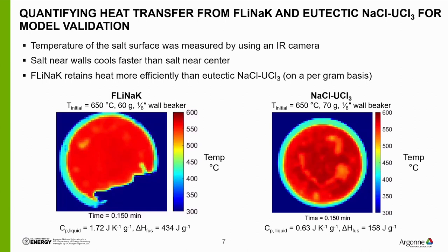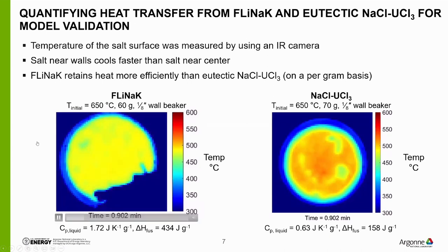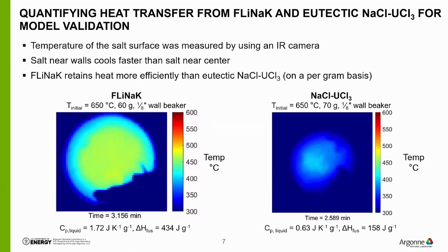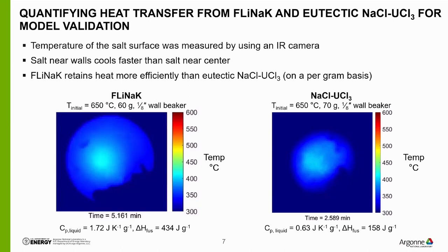Here I'm showing results from one of our measurements to demonstrate how we obtain data for heat transfer model validation. The two IR videos show salt surface temperature of FlyNaK on the left and eutectic NaCl-UCl3 on the right for comparison. For both tests, salt was initially at 650°C and poured into a room temperature beaker. The salt cools fastest near the walls of the beaker in both cases, and FlyNaK is much more efficient at retaining heat—both videos stop when all pixels fall below 400°C, and FlyNaK takes about twice as long to reach that point. This is expected because FlyNaK has a much greater heat capacity and heat diffusion on a per-gram basis than the chloride salt.